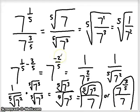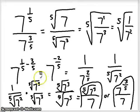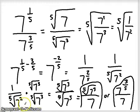So rationalizing with higher powers other than square roots is slightly tricky. As you can see, we wanted to get rid of that 5th root. We didn't just multiply by 7 squared — that wouldn't have gotten rid of the 5th root. So that's something to keep in mind.